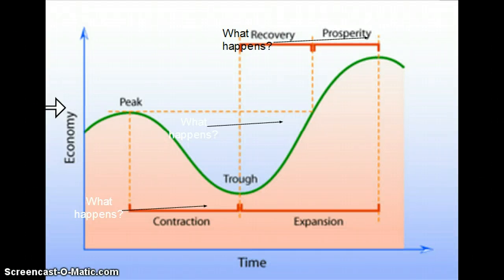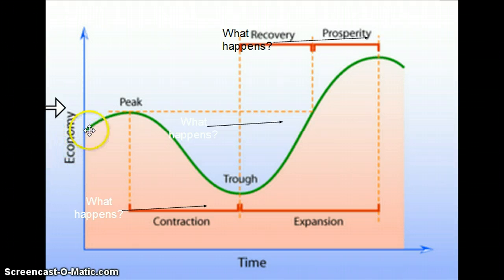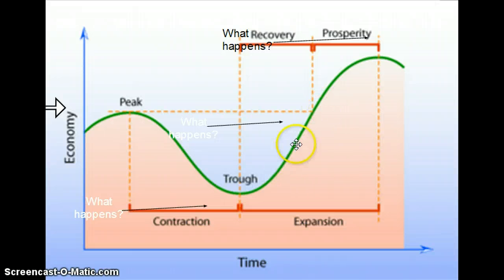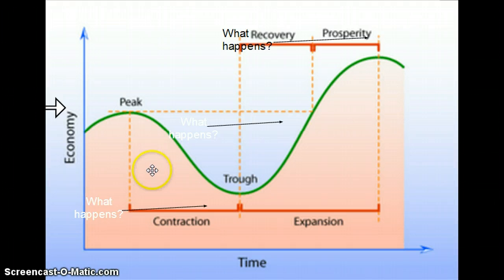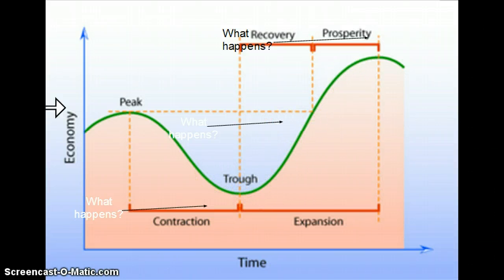We're going to talk about the business cycle and how economic indicators are incorporated within it. In a normal economy, we go through swings and periods of ups and downs where the indicators can look bad at times and good at other times. The hope is that our times of prosperity, recovery, and expansion outlast our times of contraction. We'll run through what's happening to our economic indicators during each period.